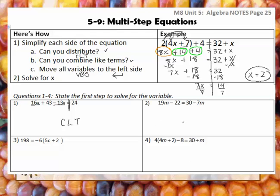Let's talk about what would be the first step. Do I have any distributive property in number 2? No. Do I have any combining like terms on either side? No. But I do have a negative 7m that I need to move to the left, so I would do positive 7m to both sides. That's your variables on both sides — your letters to the left. So you need to do VBS first.